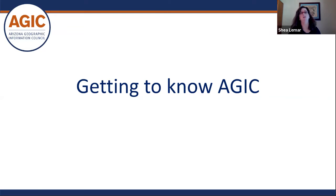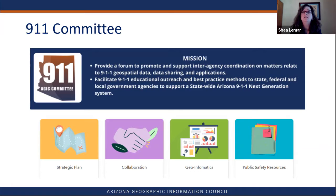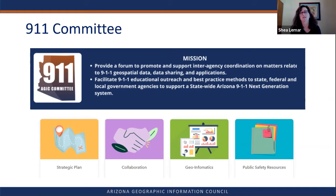Getting to know AJIC — I want to introduce you to some of the committees and work groups within AJIC. Let's talk about the 911 committee. Its mission is to provide a forum to promote and support interagency coordination on matters related to 911 geospatial data sharing and applications. They facilitate educational outreach and best practices throughout the state, working with federal, local, and county agencies supporting 911 and working to get next-gen 911 out the door. They've put together a strategic plan on how to implement things, both past and with NG-911 coming.